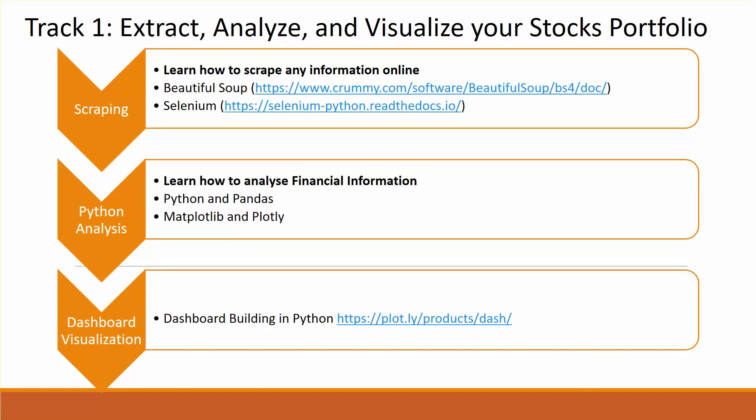For the first track, we will start by learning how to scrape financial information online from sources like Market Watch or Google Finance. We're going to use Beautiful Soup or Selenium to do it.